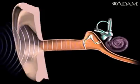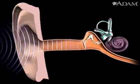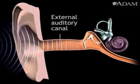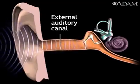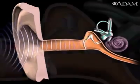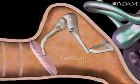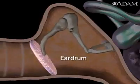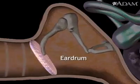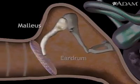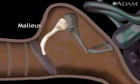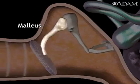Sound waves entering the ear travel through the external auditory canal before striking the eardrum and causing it to vibrate. The eardrum is connected to the malleus, one of three small bones of the middle ear.